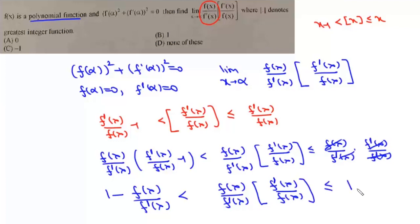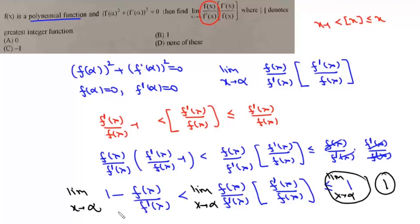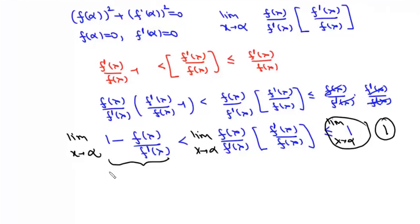Taking the limit as x tends to α throughout, the right-hand side limit is 1. For the left-hand side, we need the limit of 1 − f(x)/f'(x). Since f(α) = 0 and f'(α) = 0, α is a double root of f(x), so we can write f(x) = (x − α)² · p(x).